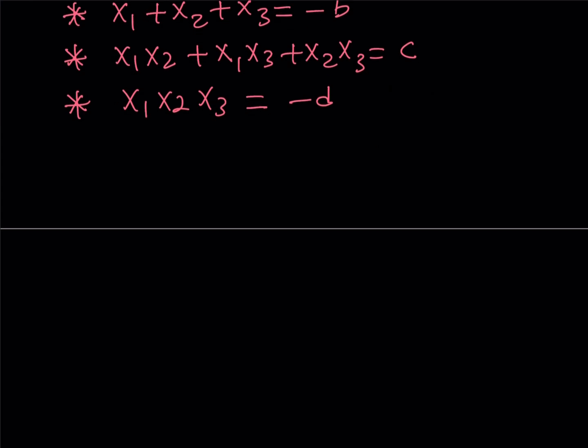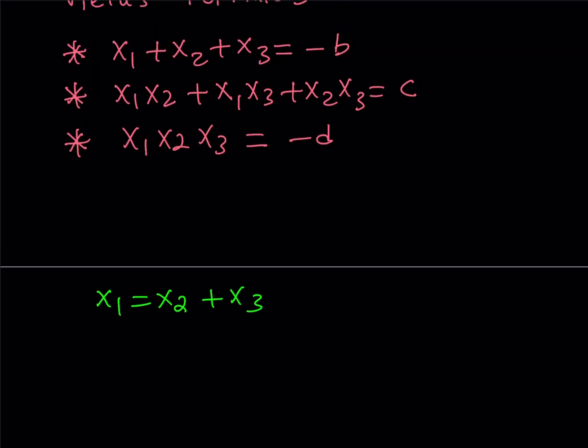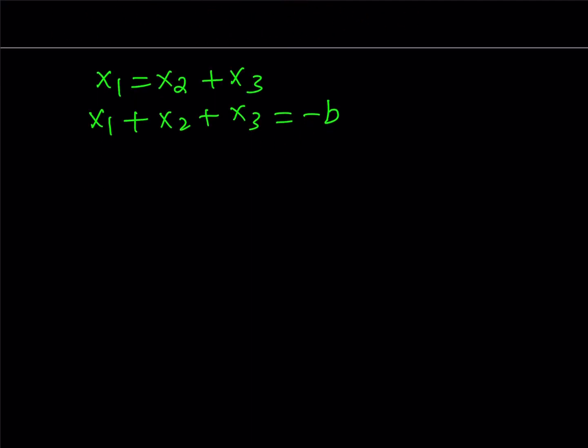Since we know that x1 equals x2 plus x3, and we have this first relationship, let's put those together. We have x1 plus x2 plus x3 equals negative b. What I can do is substitute instead of x2 plus x3, I can just write x1. This gives me 2x1 equals negative b, and if you divide both sides by 2, you get x1 equals negative b over 2. So we got one of the solutions in terms of the coefficients, which is cool.